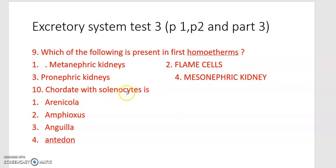Next: the card date with solenocytes is — arenicola, amphioxus, anguilla, and t-don. That's all — these are the 10 bits. Try to answer these 10.